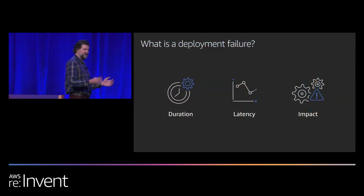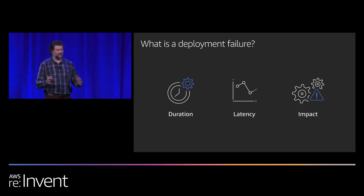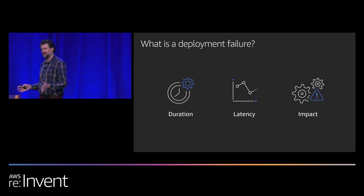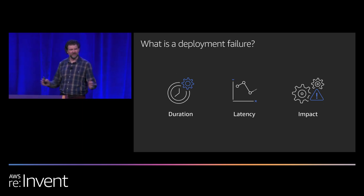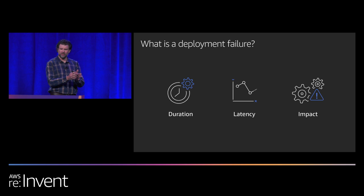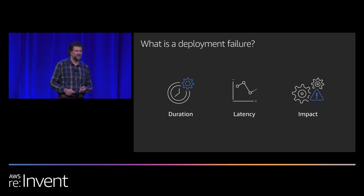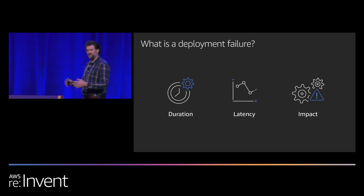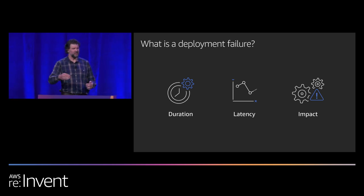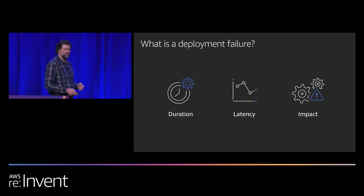Given that definition about customer impact, we have three attributes of a deployment failure to consider. The first is duration — if we can cut down the time of a deployment failure to be sufficiently small that it doesn't cause any customer impact, then it's not a deployment failure. A deployment failure has to last long enough, has to breach the latency and performance contract that a service has with its customers, and has to cause some kind of impact. Even if a deployment was in production for a while and we subsequently roll it back, if it didn't cause any customer impact, we don't consider that a deployment failure.